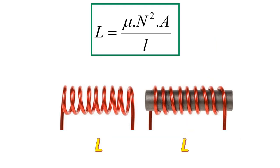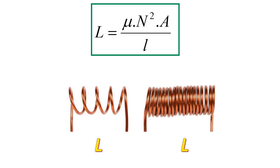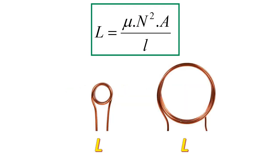Let's see how the inductance value of a coil is calculated using core length, core cross-sectional area, and number of turns. First, let's look at how the inductance value changes by means of magnetic permeability. The inductance value decreases when using air with low magnetic permeability as a core, while the inductance value increases when using iron, which has high magnetic permeability, as the core. Similarly, inductance value decreases when the number of turns decreases, and increases when the number of turns increases.